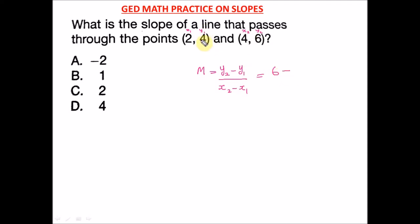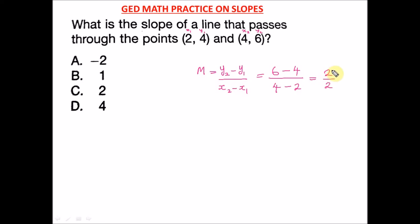Now let's input these values. y2 is six, minus y1 which is four, divided by x2 which is four, minus x1 which is two. So we have six minus four, which is two, and four minus two, which is also two. We have two over two, which reduces to one.